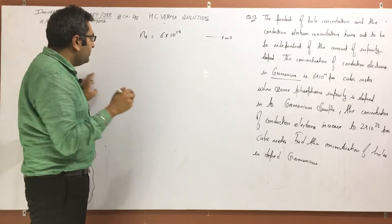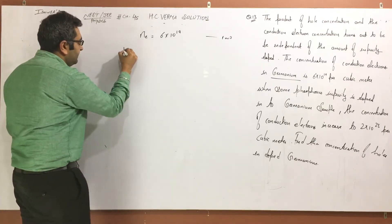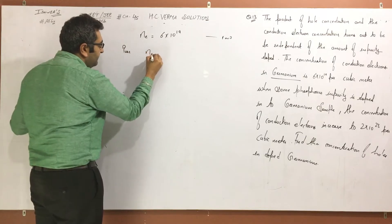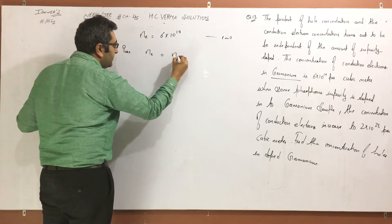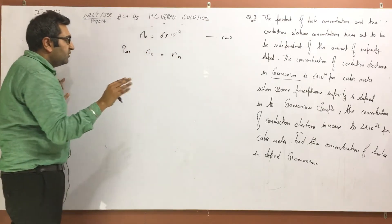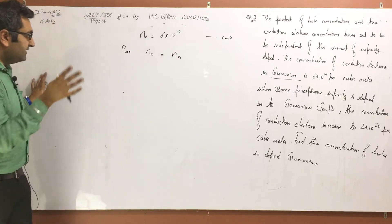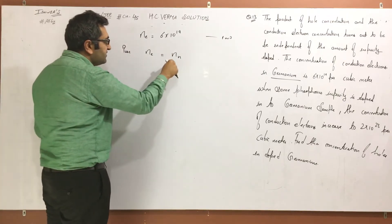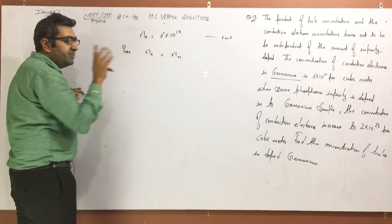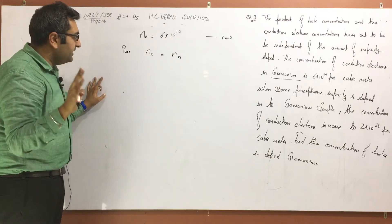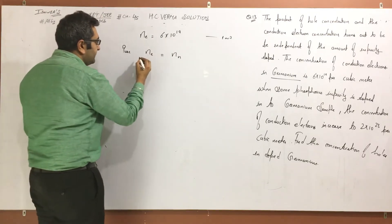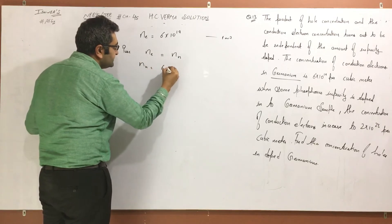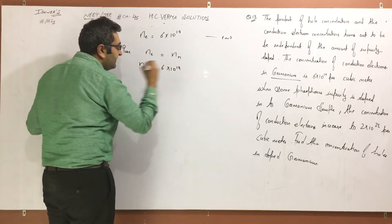It is pure — I am talking about the pure state. The conduction electron concentration is equal to the number of holes. We have seen clearly that the number of electrons equals number of holes. This means the doping is not yet done. So the number of holes is also 6 into 10 raised to power 19.